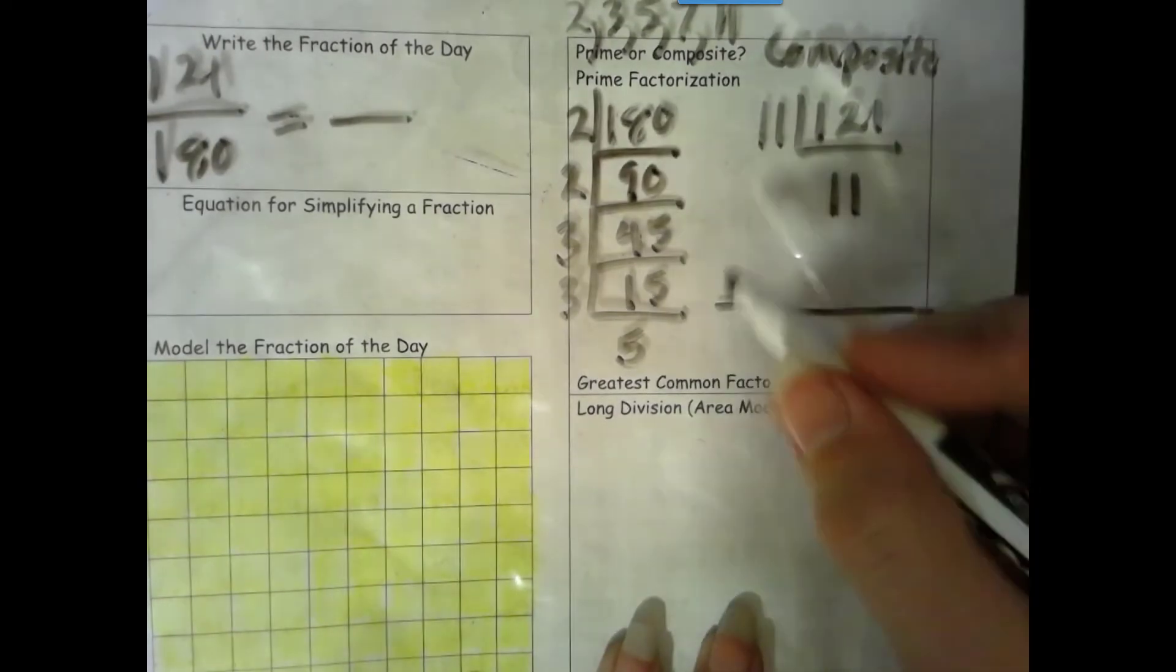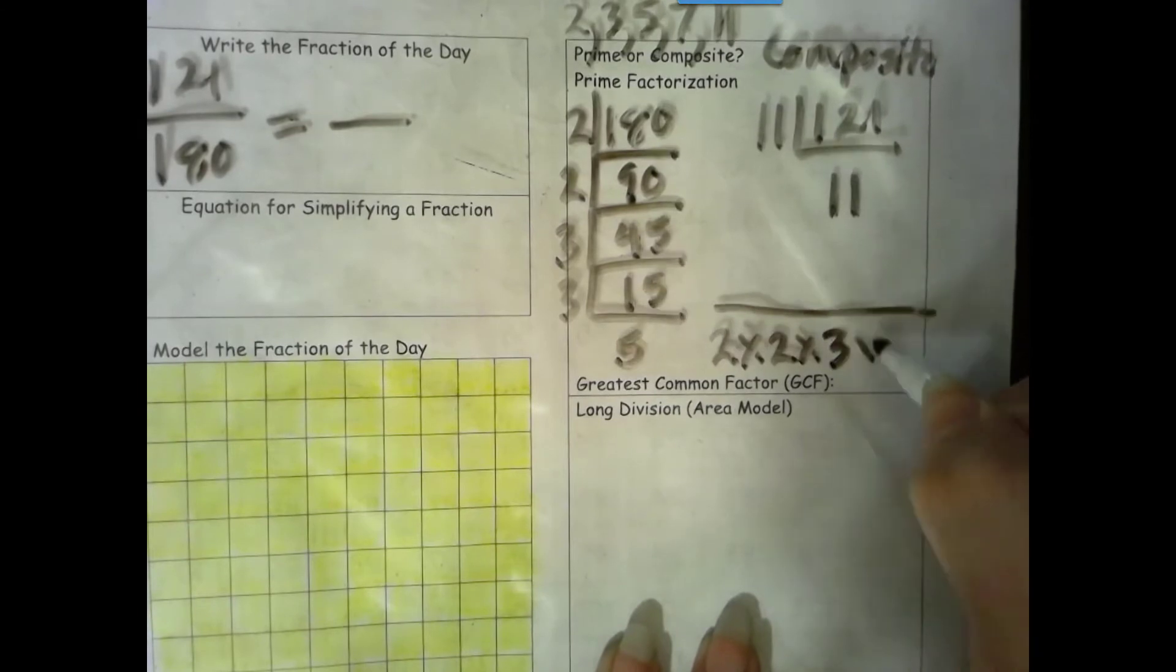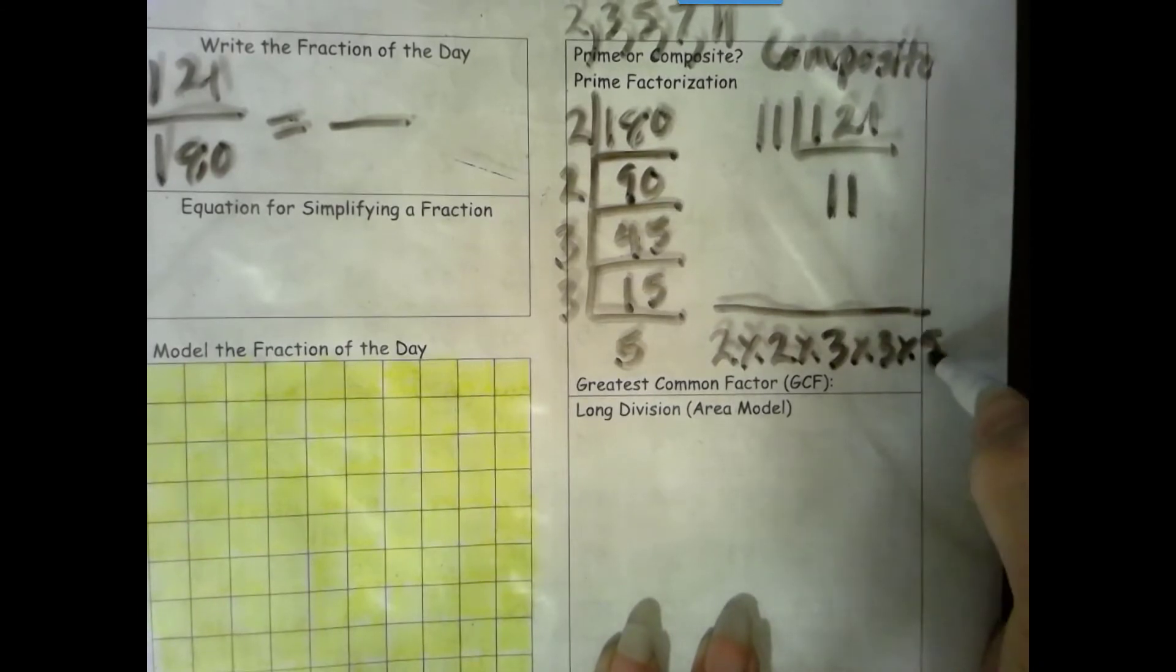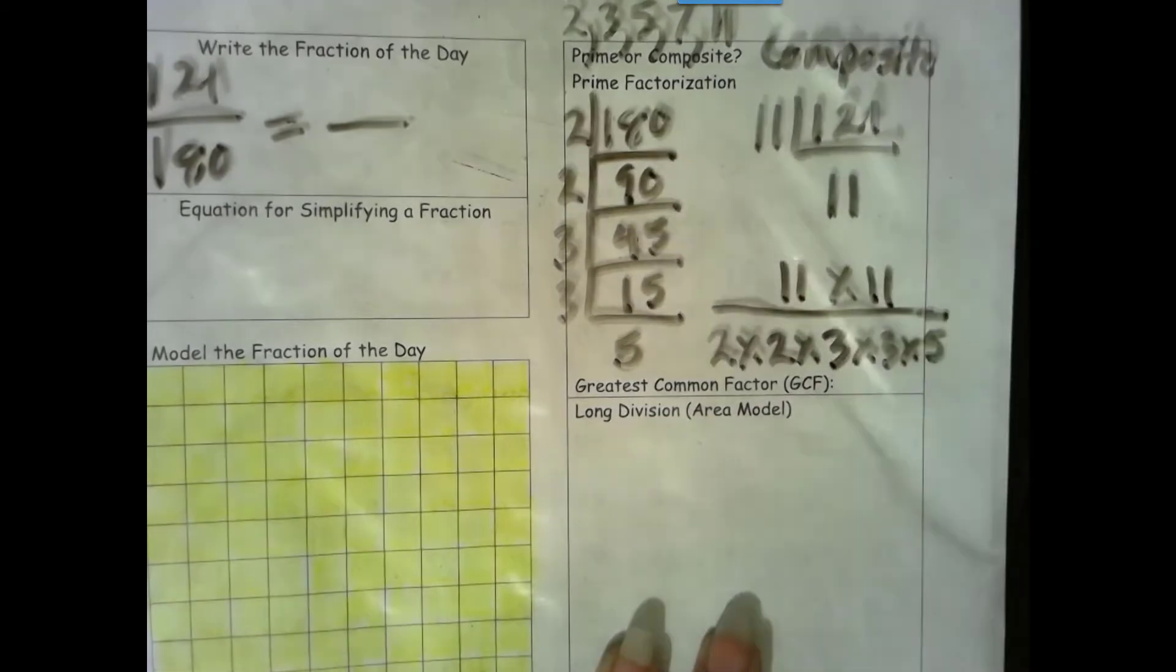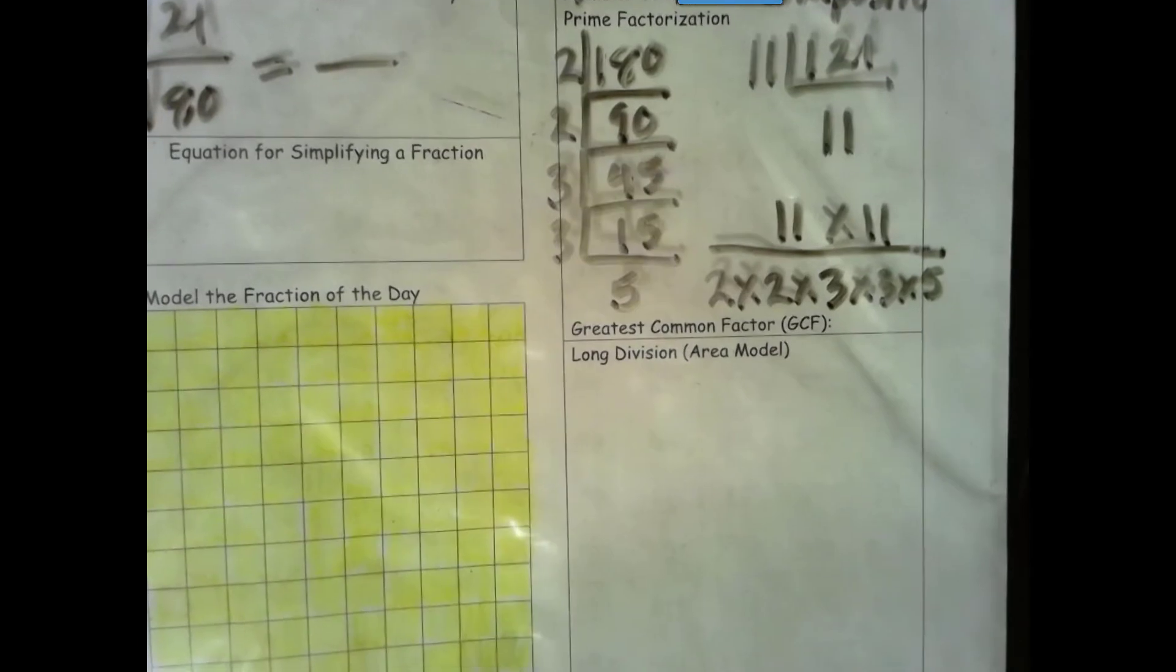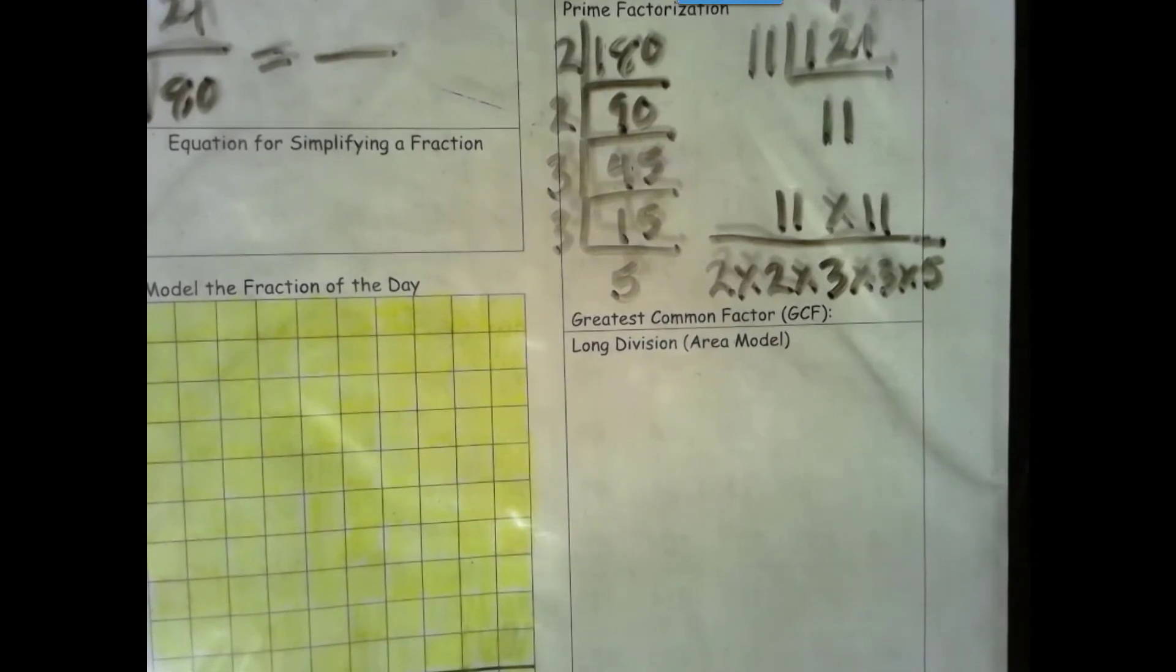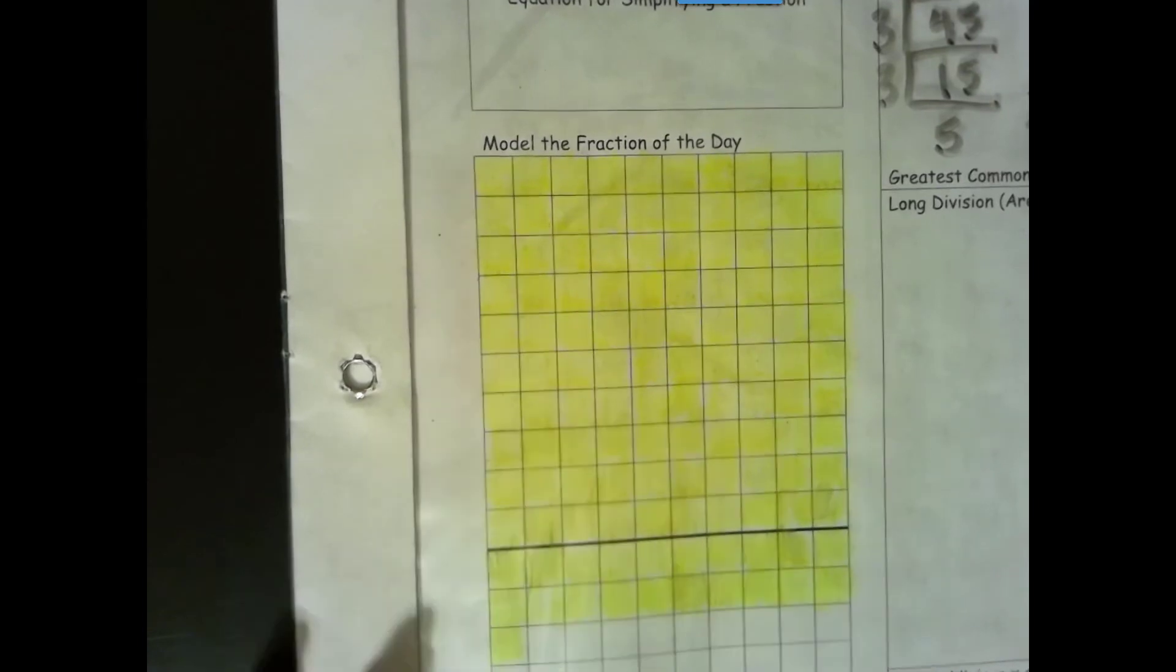Let's go ahead and get down our prime factorization from least to greatest. 2 times 2 times 3 times 3 times 5, and 11 times 11. Do we have any common factors here? No, there's no 2s, 3s, or 5s up here, no 11s, so our greatest common factor then is 1. Let's go ahead and make our groups of 1. They are done.